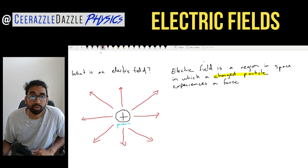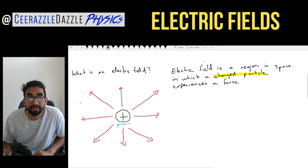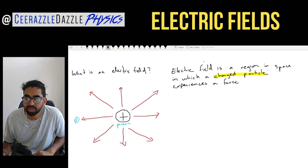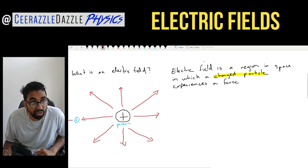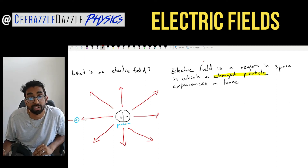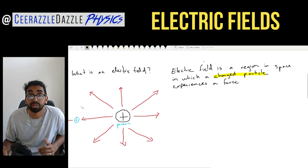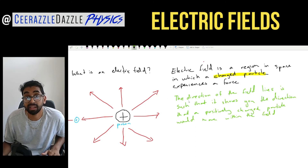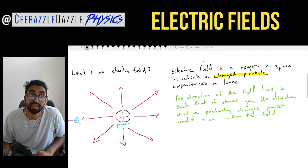You might be wondering why the arrows are going away from the object. Let's say if I was to put a positively charged particle nearby — well, there's a big positive charge here, and both of them are the same charge, so obviously it would be repelled away. It would move in the same direction as that field line because it moves away from the other charged particle. The direction of the field lines shows you the direction in which a positively charged particle would move within that field.